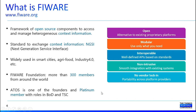Why should you choose FIWARE as your base technology for context information applications? First of all, because it's open, in alternative to existing proprietary platforms. Second, because of modularity — you can just pick up the module that is needed for you. It's interoperable, supporting a set of APIs based on standards that allow you to manage context information. It's non-intrusive because you can smoothly integrate with existing systems. And you avoid vendor lock-in, so you can port your solution easily across different platform providers using the same FIWARE standard.